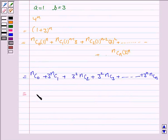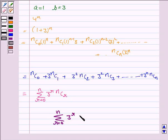And we can write this in the summation form. So, summation r running from 0 to n, 3 to the power r into ncr is equal to 4 to the power n.